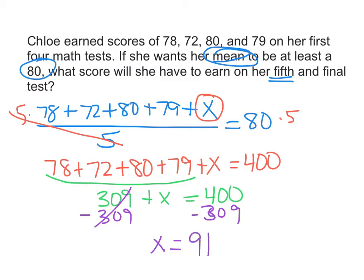So that means that Chloe will have to earn a score of 91 on her last test to get that average of an 80. So she'd have to do pretty well.